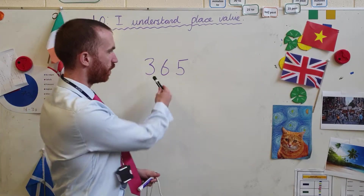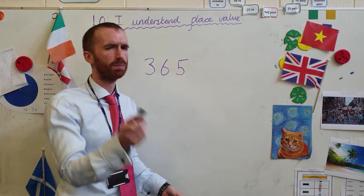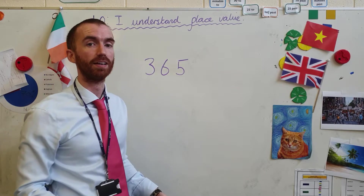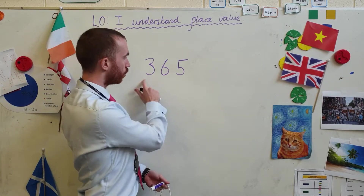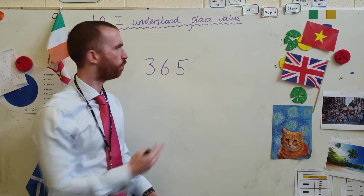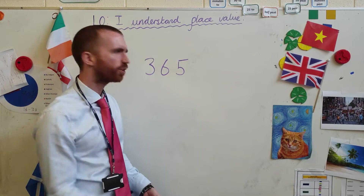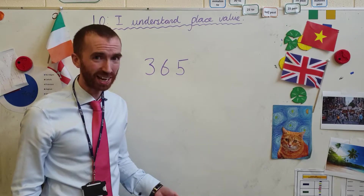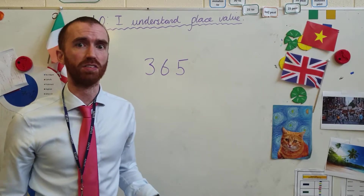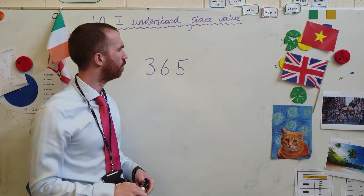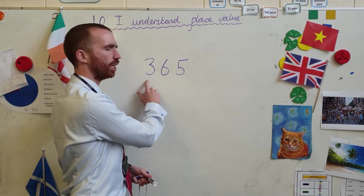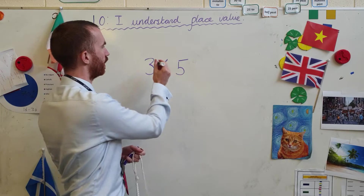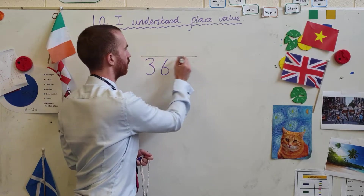So even though this number we can see is 365 — an important number, why is that? It's how many days in a year. So even though we know the number is 365, what do each of those numbers mean? For example, is that a 6? Well, it looks like a 6, but in reality it isn't — the value of it is not 6. So what is the value of each of these numbers? Well, we use something called a place value grid to understand this.